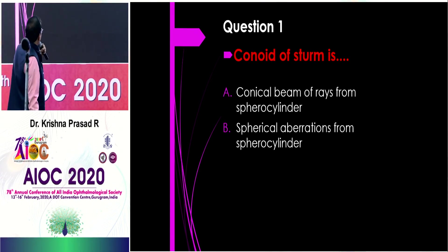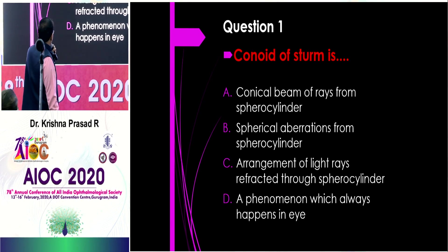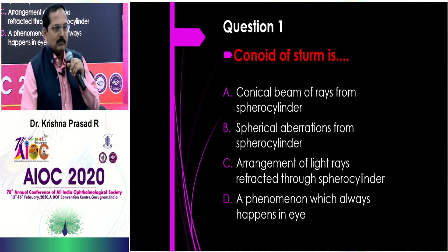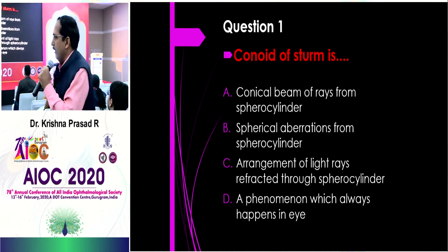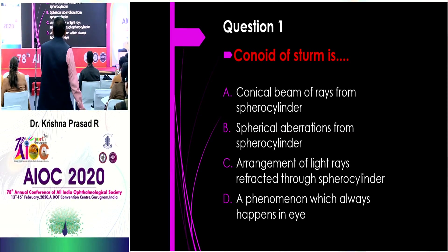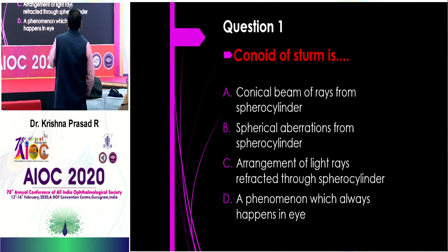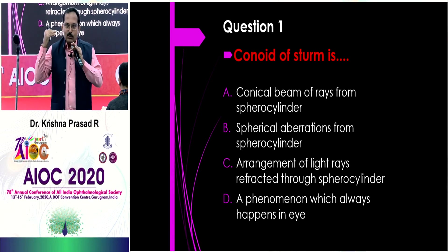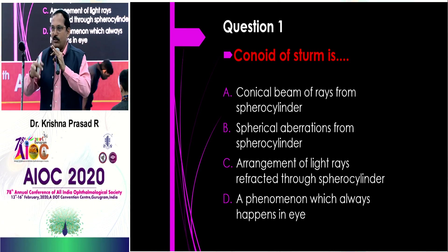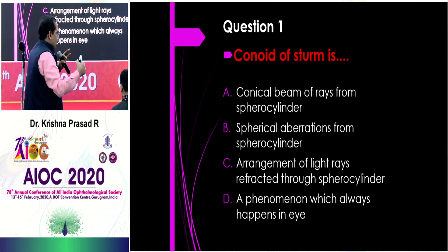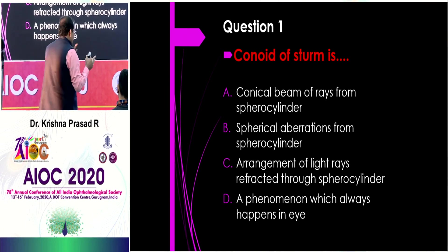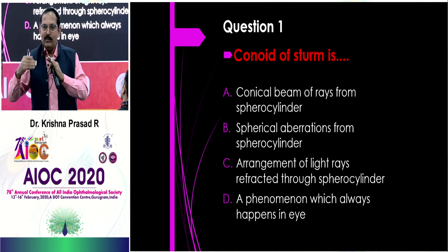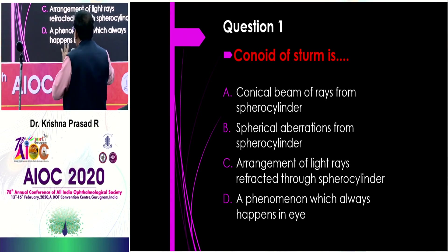Question 1 to Dr. Santosh's team: What is Conoid of Sturm — the conical beam of rays from a sphero-cylinder? The answer: when light passes through a sphero-cylinder, there is a first focal line, then a circle of least confusion where vertical diverging rays and horizontal converging rays become nearly equal, and then a second focal line, after which all rays diverge. This arrangement is the typical Conoid of Sturm.